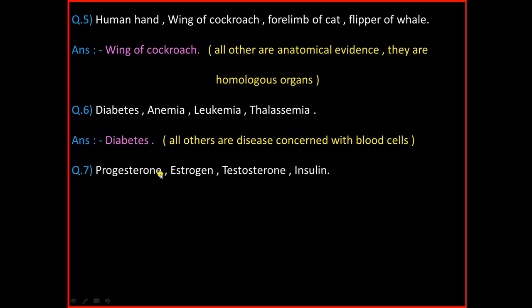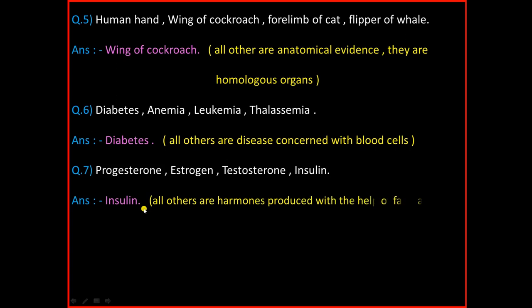Question Number 7: Progesterone, Testosterone, Estrogen, Insulin. And the answer is Insulin. The reason is all others are hormones produced with the help of fatty acid.